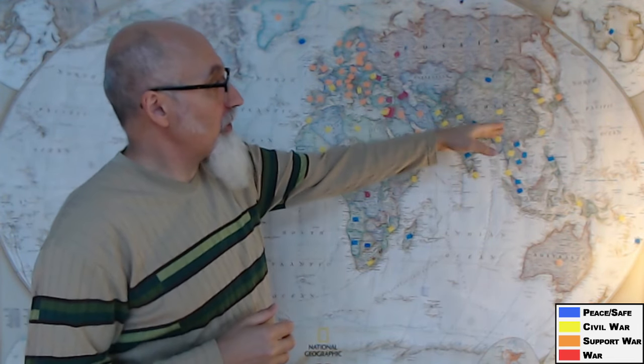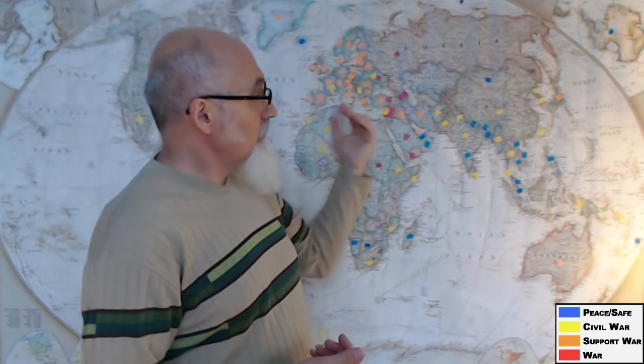What should we call it, the Eurasian block. Eastern Europe, Russia, China, everyone that signs up with Russia-China, Iran, North Korea, a huge chunk of African nations.